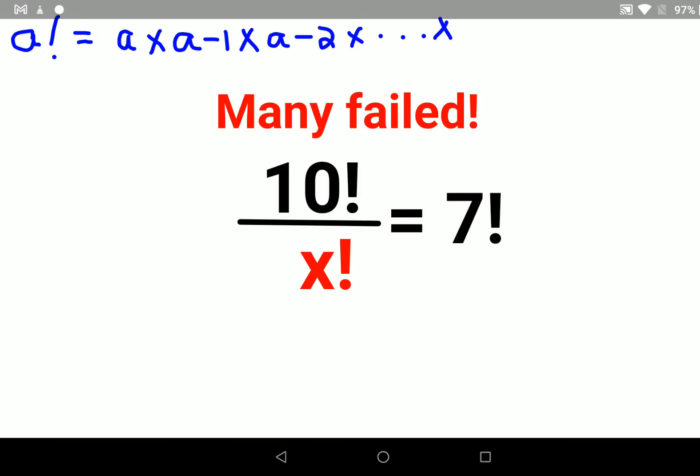So now, the first thing we will do is shift the x factorial on the other side. This becomes 10 factorial upon 7 factorial. So I can say x factorial is nothing but 10 factorial upon 7 factorial. Let's expand this.